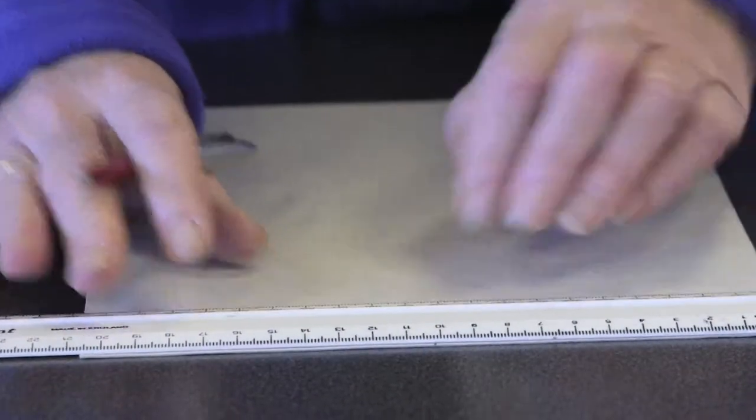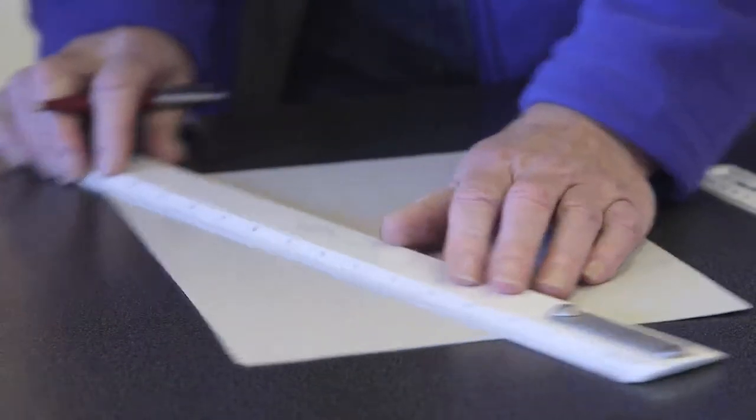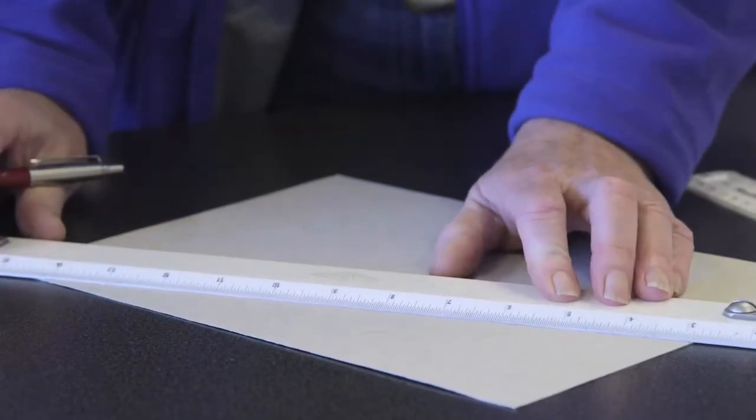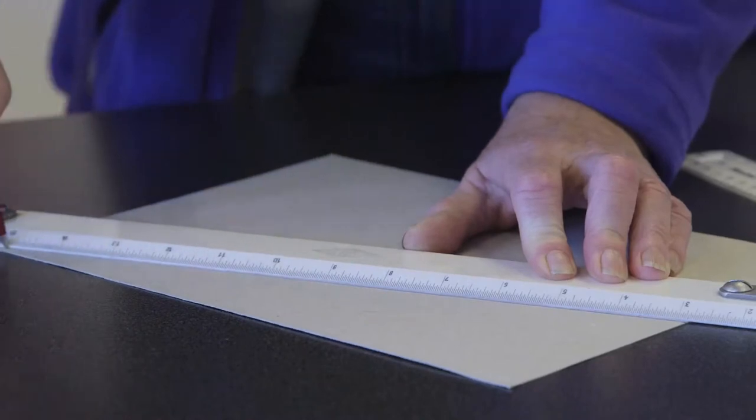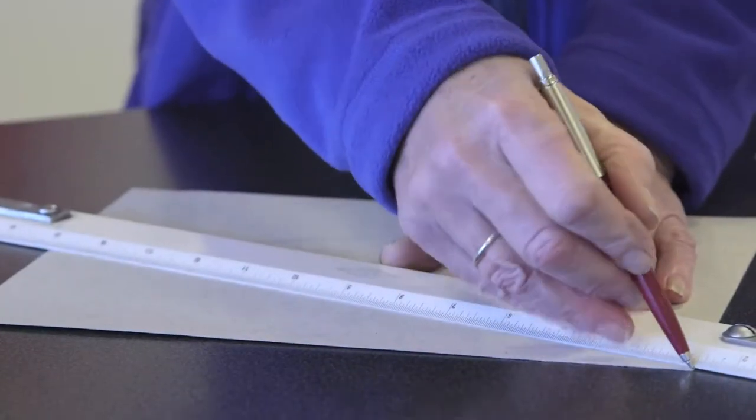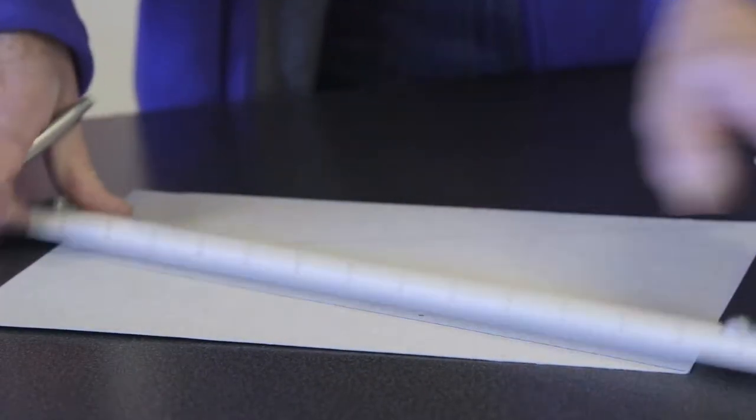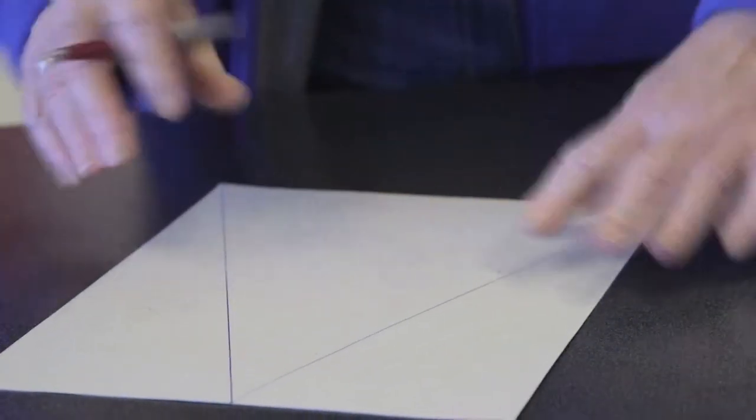Then take a ruler, mark from that point to each of the opposite corners on the card. That gives you your basic template shape.